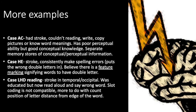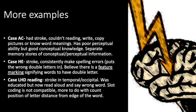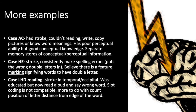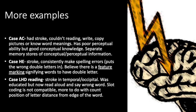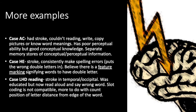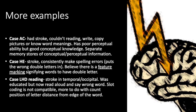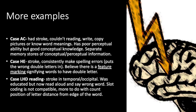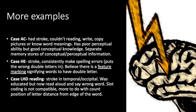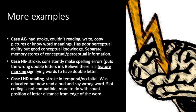Case AC had a stroke and could not read, write, copy pictures, or know word meanings. However, AC had poor perceptual ability but retained good conceptual knowledge. From case AC, it was understood that memory stores of conceptual and perceptual information are separate — concepts and perceiving those concepts are stored in different areas of the brain.